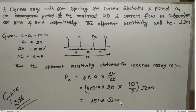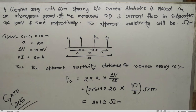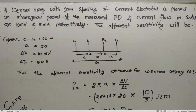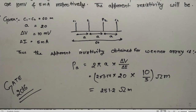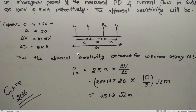Thus, apparent resistivity ρₐ = 2πa × (ΔV / ΔI). Solving this gives the answer: 251.2 ohm-meter. This is from GATE 2016 — not a very tough question. If you know the formula, you get the answer. Remember, Wenner array and Schlumberger array questions are always asked in geophysics.